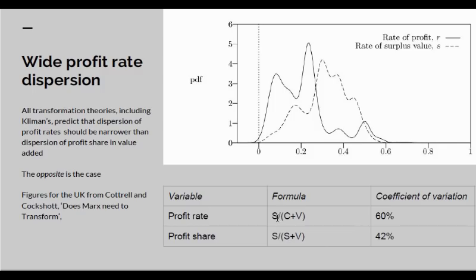The profit rate is supposed to have a single narrow distribution. In consequence, the apparent profit share — that is to say, the ratio of surplus value to surplus value plus variable capital — should have a wider distribution, but it actually has a narrower distribution.